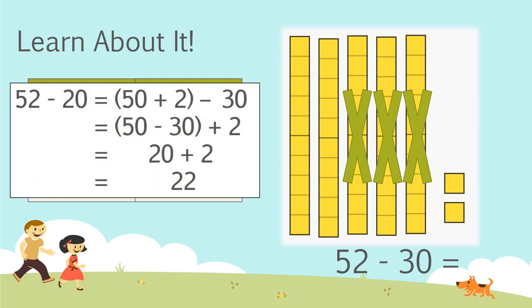So in review, if we have 52 minus 30, we know that 52 is broken down to 50 plus 2. And if we were to take away the 30, we can focus on our tens place. So 50 minus 30 plus 2 is equal to 20 plus 2, which equals 22.